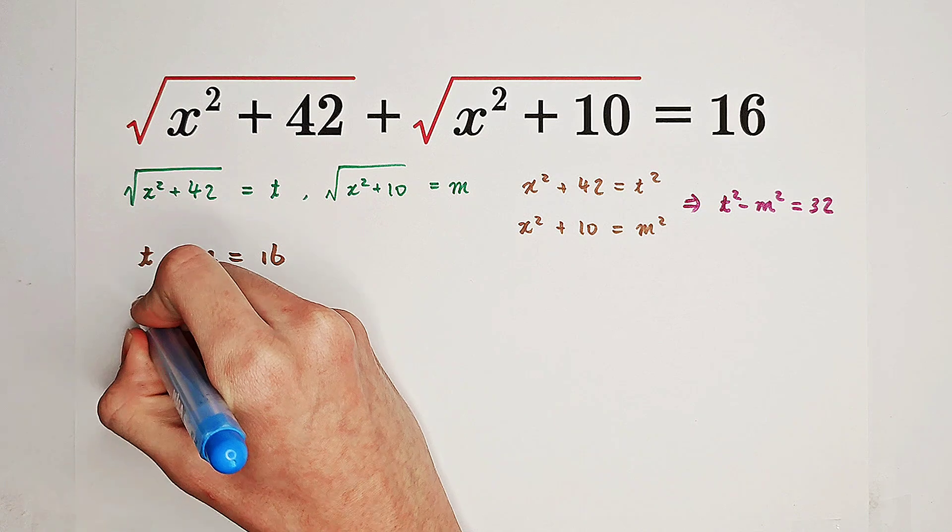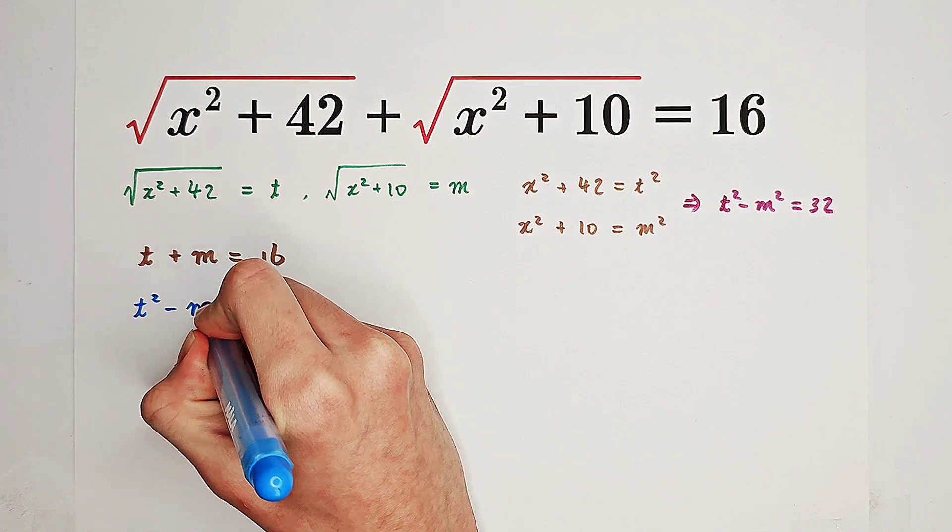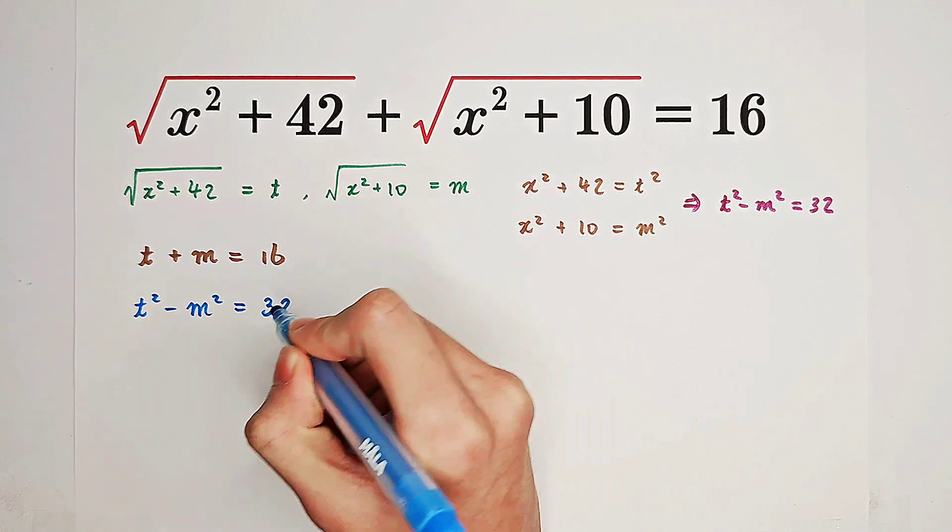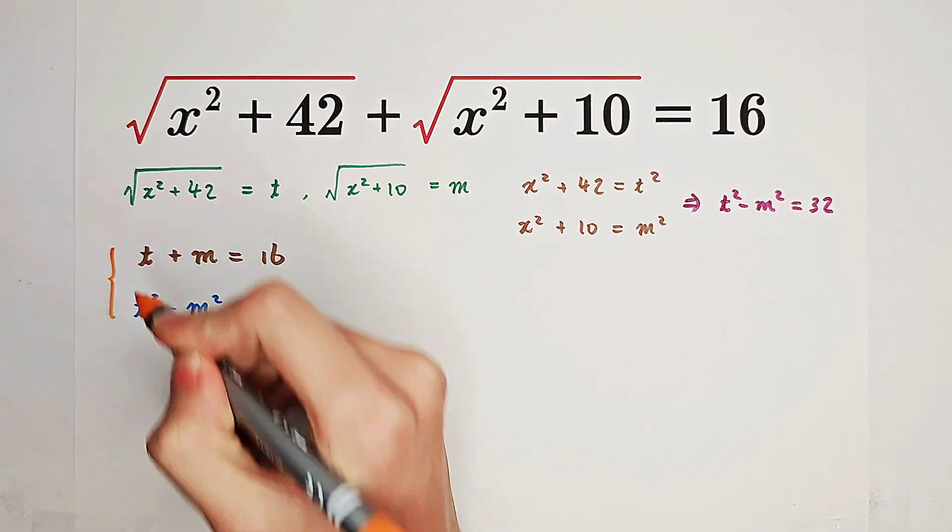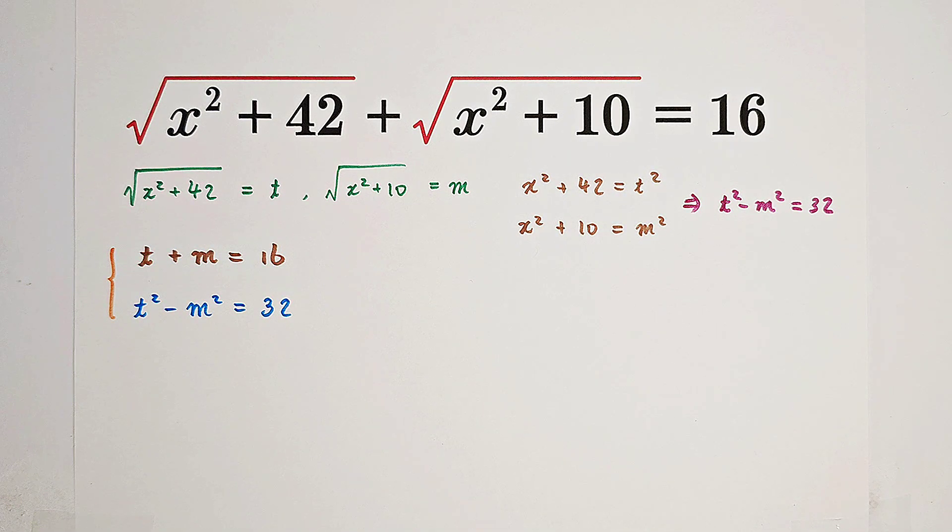So that means this system of equations looks so: t plus m equals 16, t squared minus m squared equals 32.